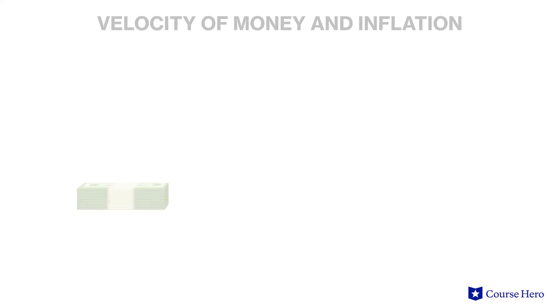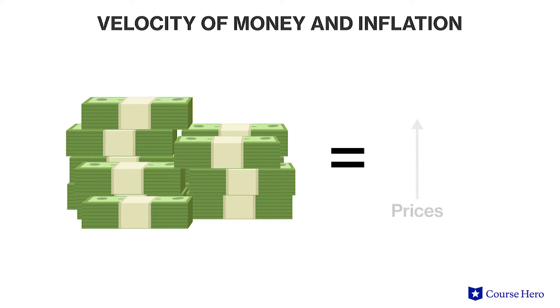Monetarists propose that the velocity of money in an economy is stable unless an event causes the velocity to change. For instance, a rising supply of money should lead to rising prices because there's more money available to be spent on the same quantity of goods and services. It follows that the opposite would be true, and deflation would be caused by a reduction in the money supply.